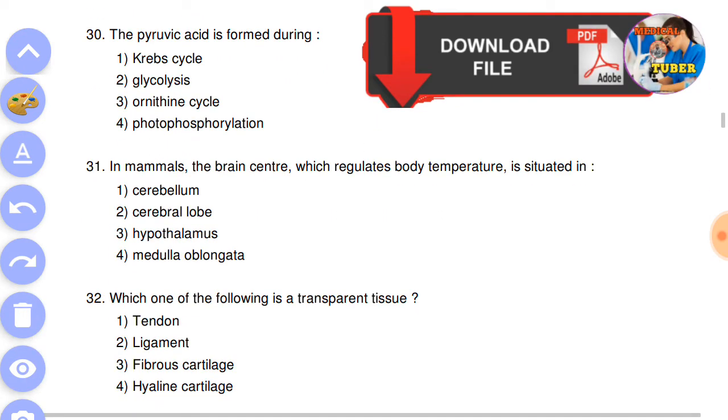Next question number 30: the pyruvic acid is formed during answer is the second, glycolysis.